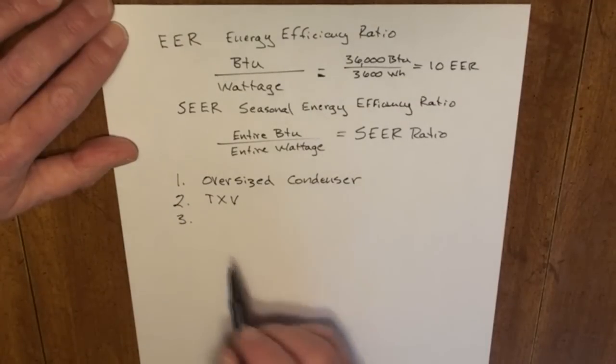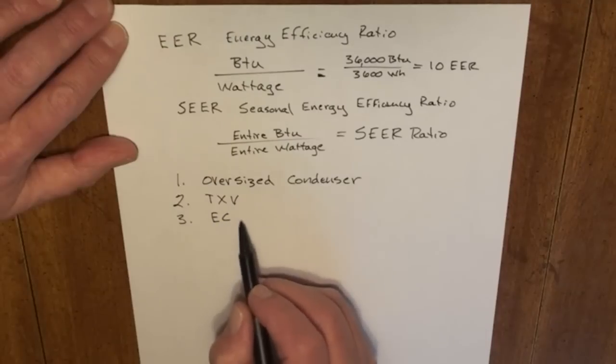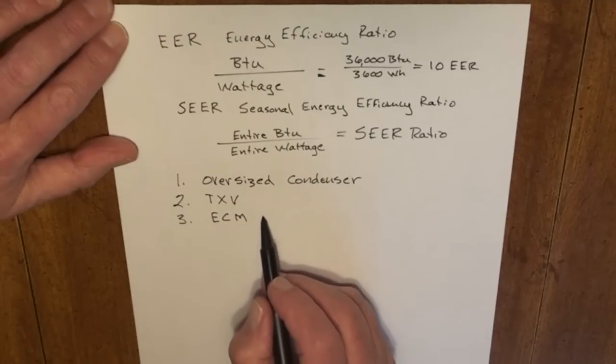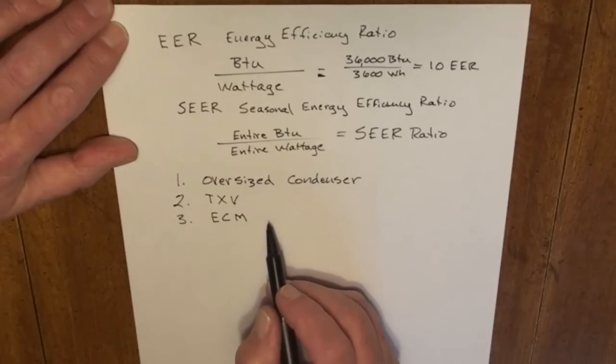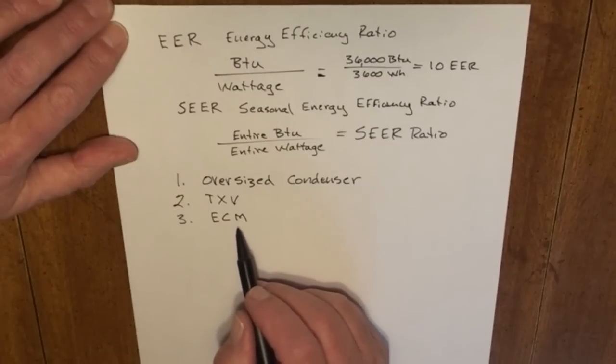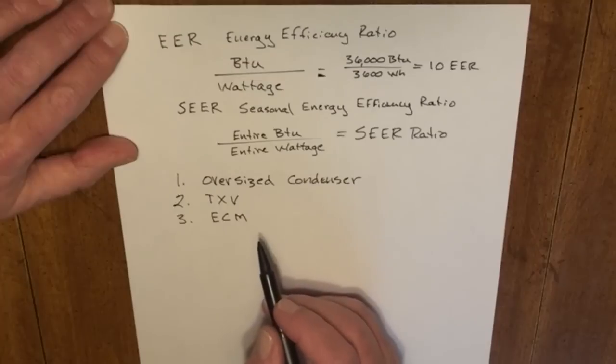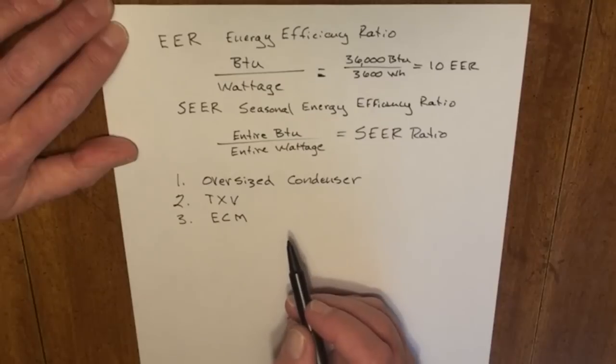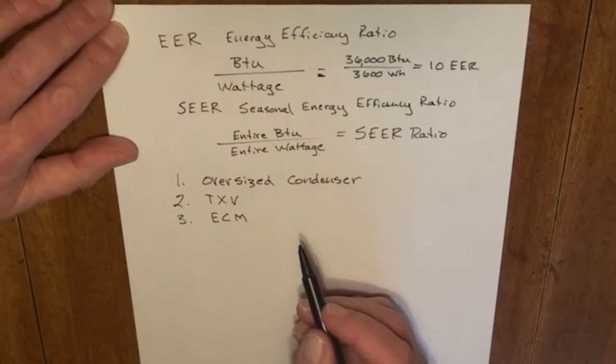Thirdly is an electronically controlled motor. Our evaporator fan motor, our blower motor, is often used as an electronically controlled module. It will modulate its speed so that our fan doesn't move any faster than it has to. That gives us more control over the amount of air that's delivered into the conditioned area.